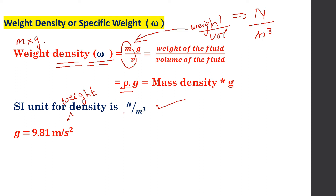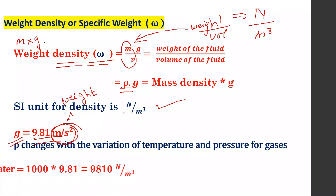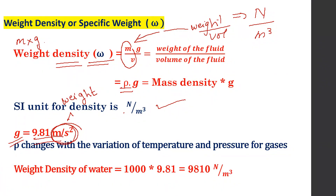The value for acceleration due to gravity is 9.81 m/s². So the weight density of water is rho multiplied by G: 1000 multiplied by 9.81, which gives 9810 Newton per meter cube.